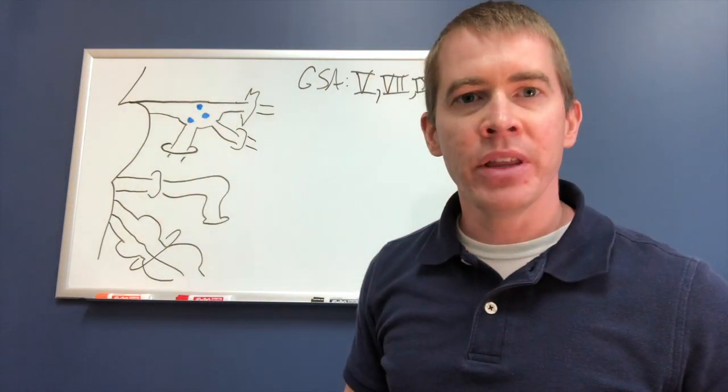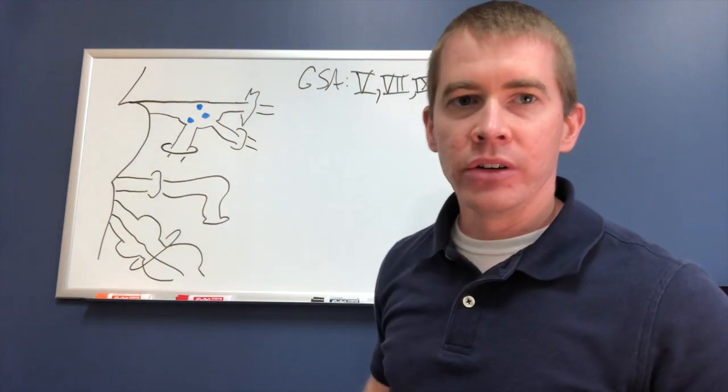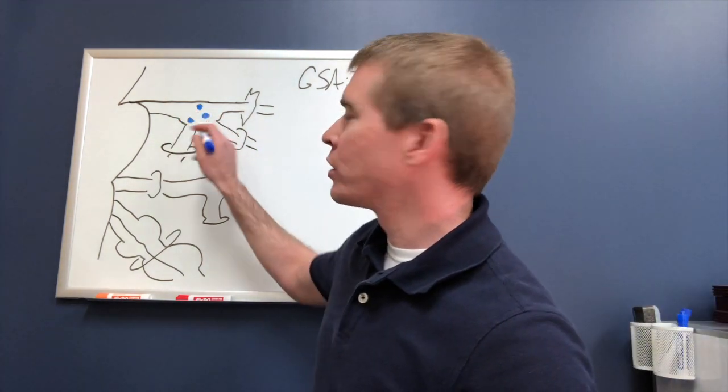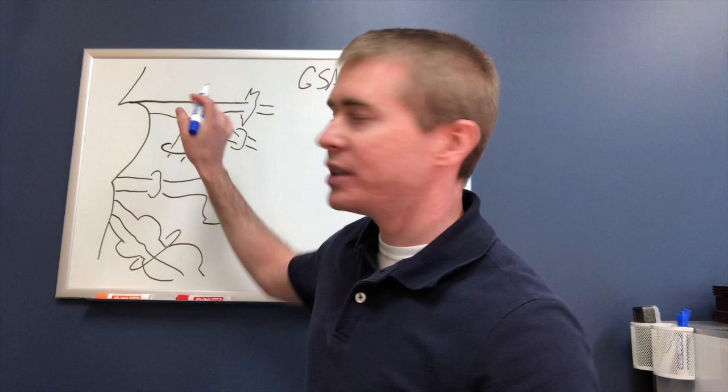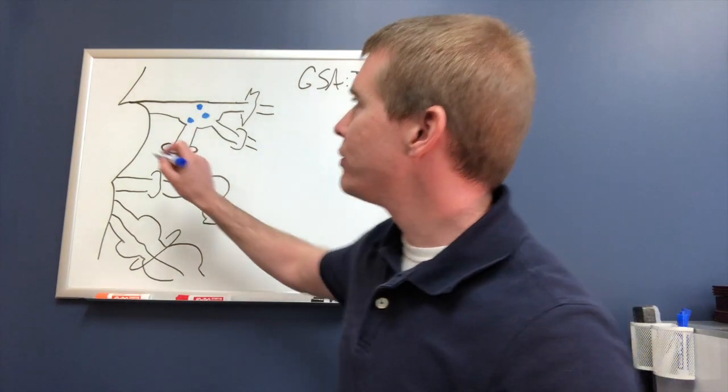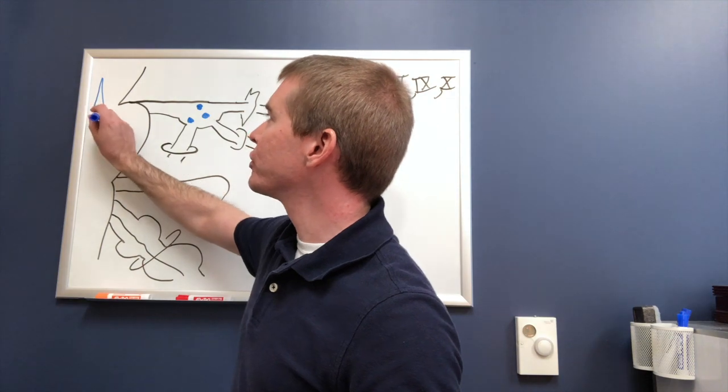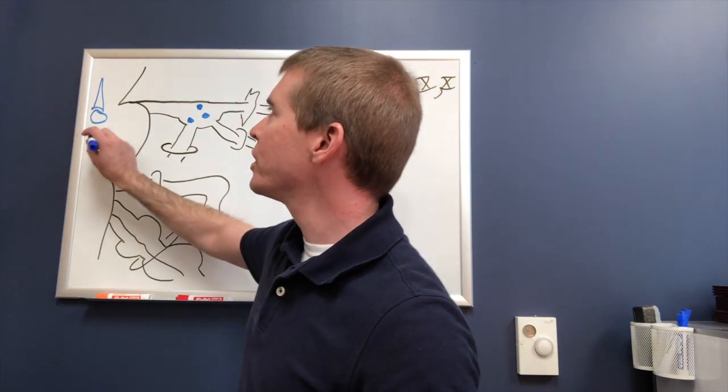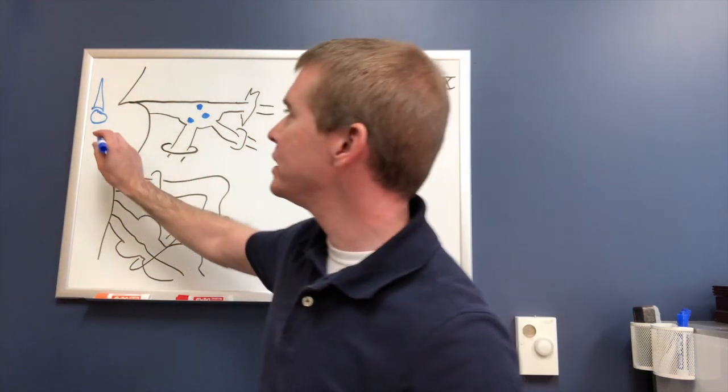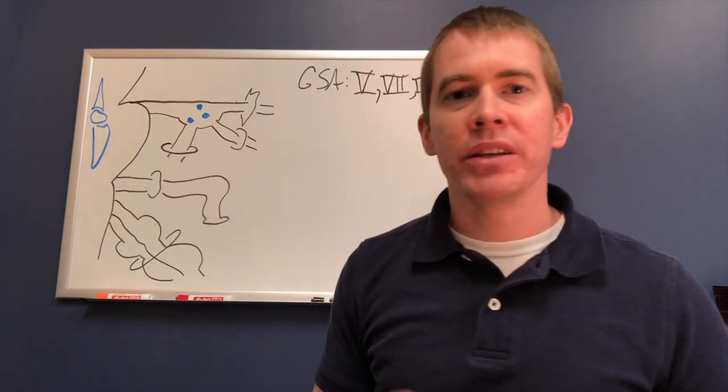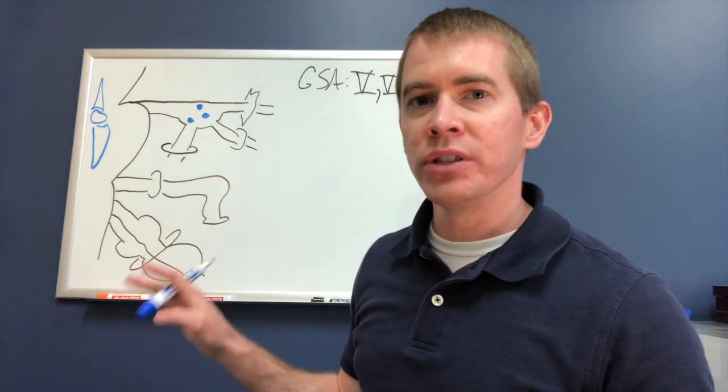Of course, the central processes travel centrally to synapse on one of the trigeminal sensory nuclei. There are three of those: the mesencephalic, the pontine, and the spinal. Depending upon the information that's received, those will go to different portions. Pain and temperature go to the pontine. Fine touch and two-point discrimination go to the spinal nucleus.